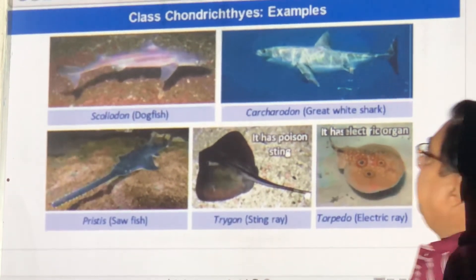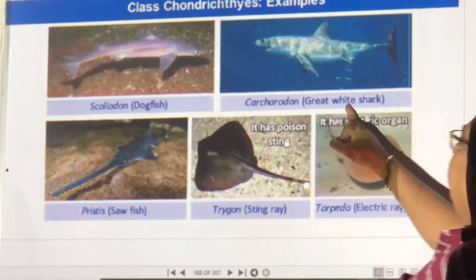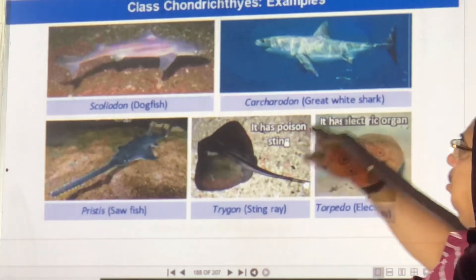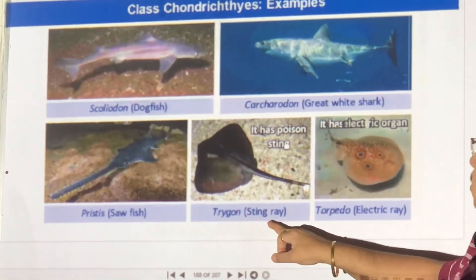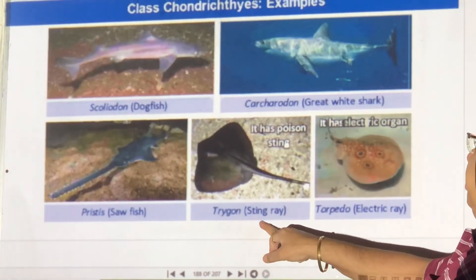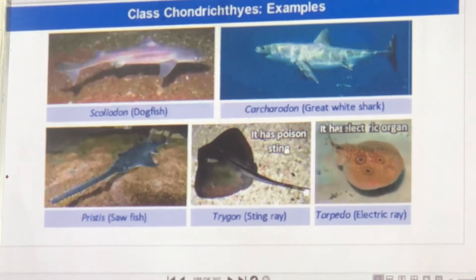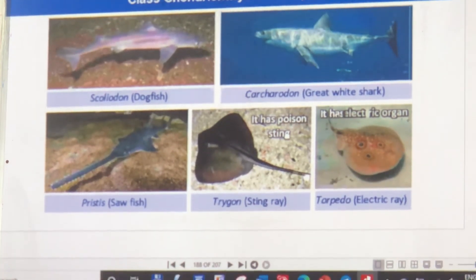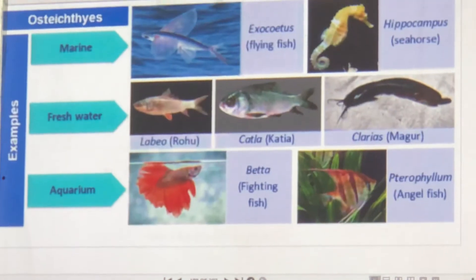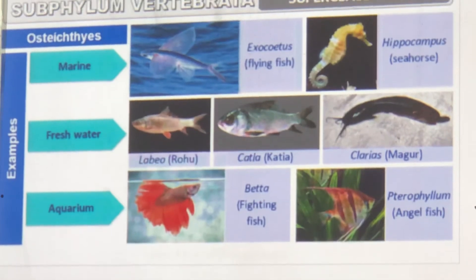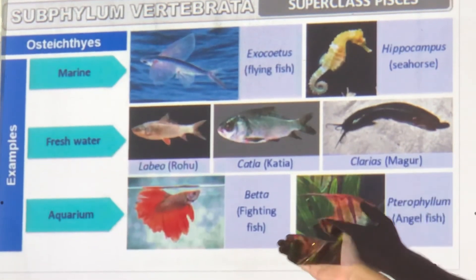Examples of Chondrichthyes: dogfish, whale shark, sawfish, sting ray, electric ray. Examples of Osteichthyes include both marine and fresh water fish, as well as aquarium fish.